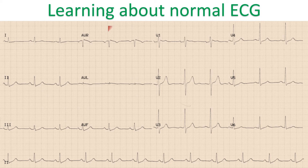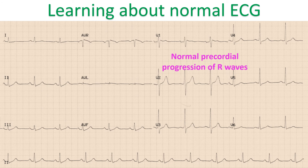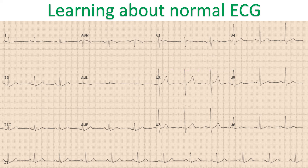Lead AVR usually has all waves inverted as it is oriented to the cavity of the heart. Chest leads show the normal progression of R waves from V1 to V6. R wave height progressively increases from V1 to V4 or V5, which usually has the tallest R wave. V6 usually has a smaller R wave than V5.